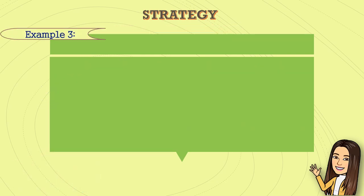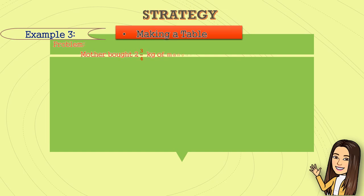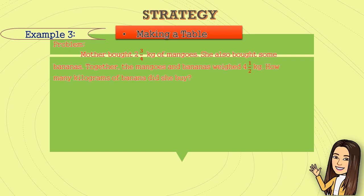Example number three: Making a table. Mother bought two and three-fourths kilograms of mangoes. She also bought some bananas. Together, the mangoes and bananas weighed four and one-half kilograms. How many kilograms of banana did she buy?